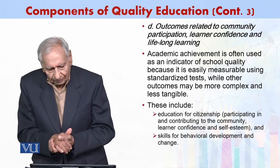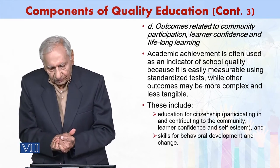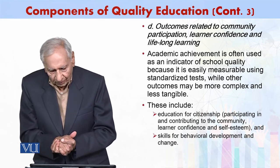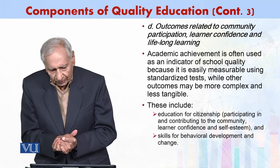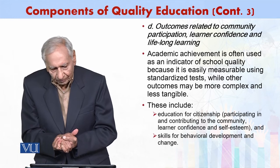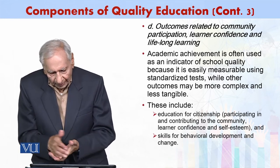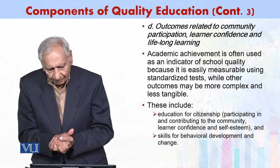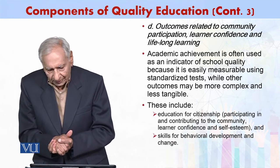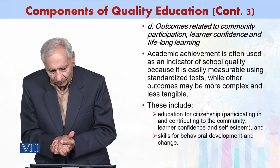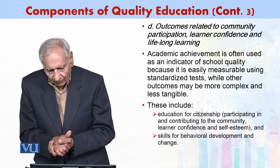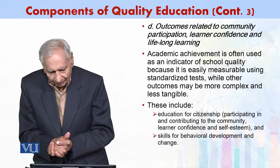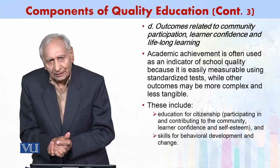Outcomes related to community participation, learning confidence, and lifelong learning are also important. Academic achievement is often used as an indicator of school quality because it is easily measurable using standardized tests, while other outcomes may be more complex and less tangible.